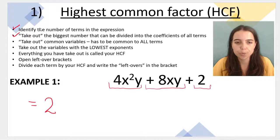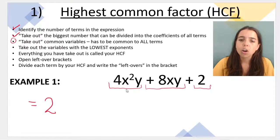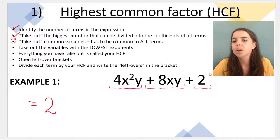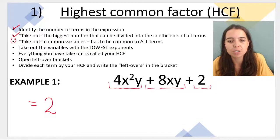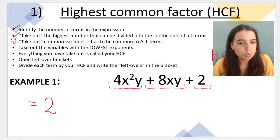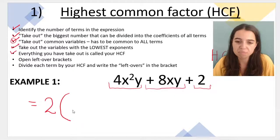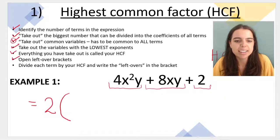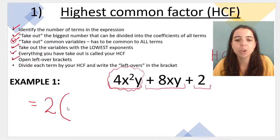Next we look for common variables. X's are in the first and second terms, and Y's are also in the first and second term — but the last term has no variables. Because the variables are not common to all three terms, we cannot take out a common variable. So our highest common factor is just the number 2. We've checked the numbers and the variables, so now we open our leftover bracket and divide each term by the highest common factor.